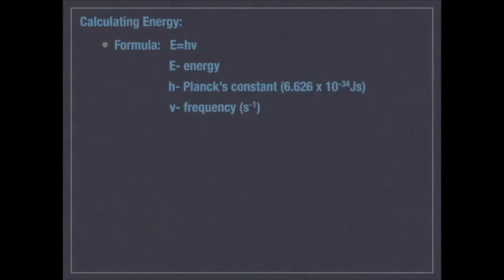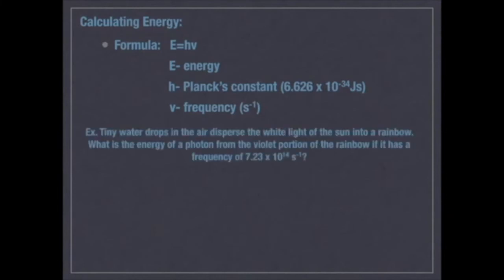Let's look at an example here. It asks what the energy is of a photon from the violet portion of a rainbow if the frequency is 7.23 times 10 to the 14th seconds to the negative one. I'm going to use my formula, and I don't know my energy.